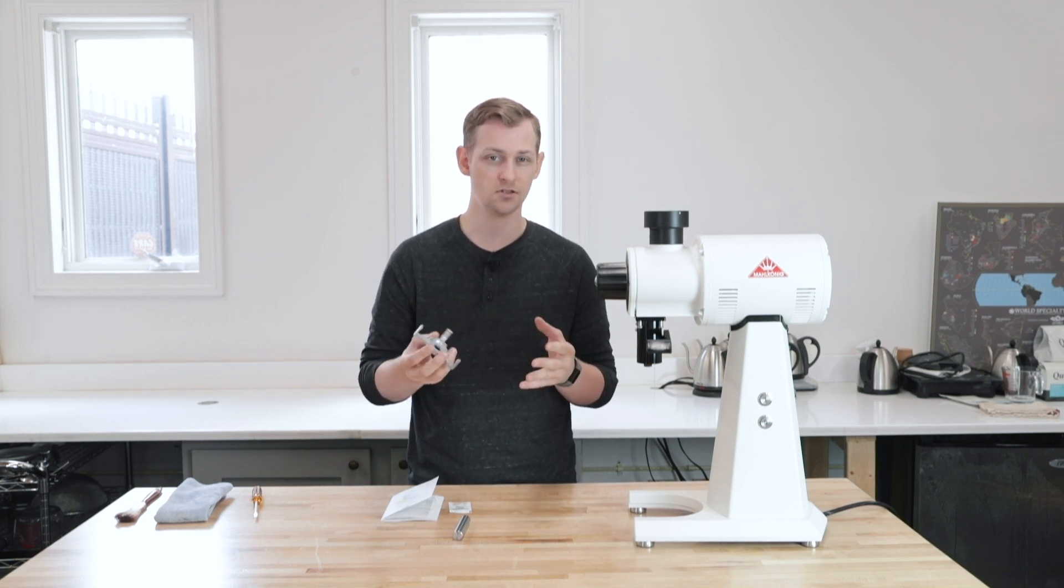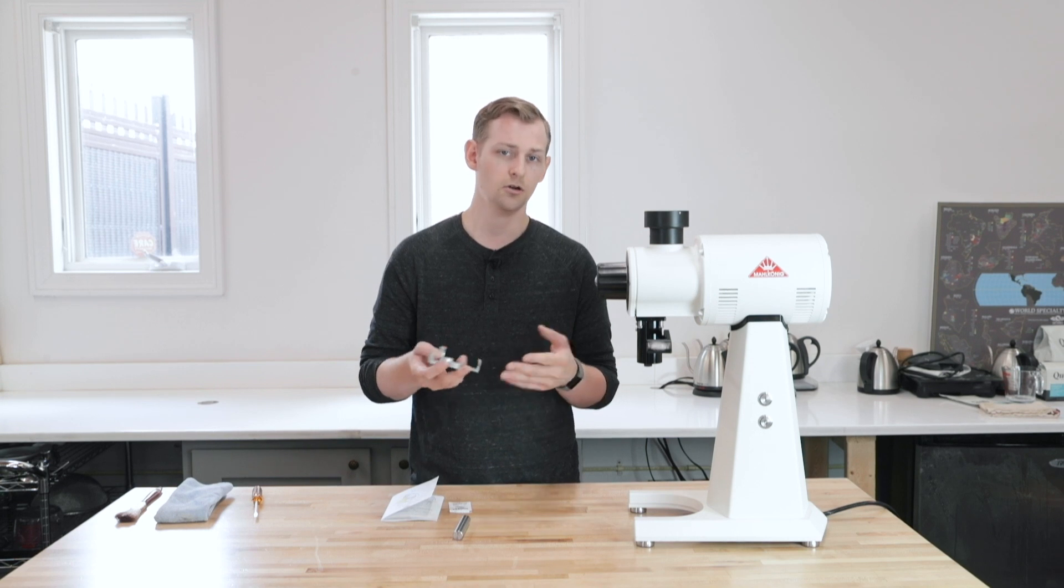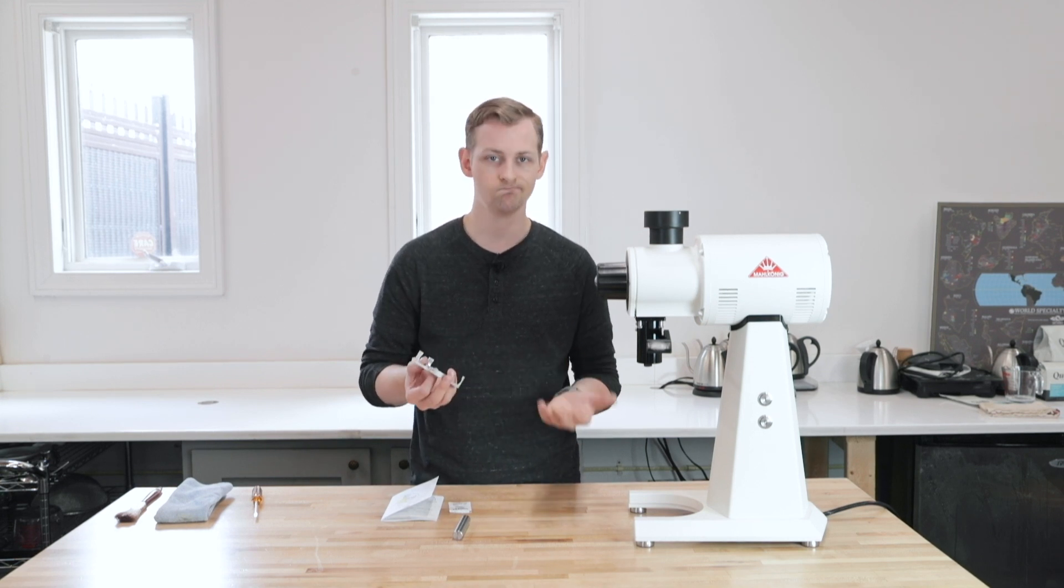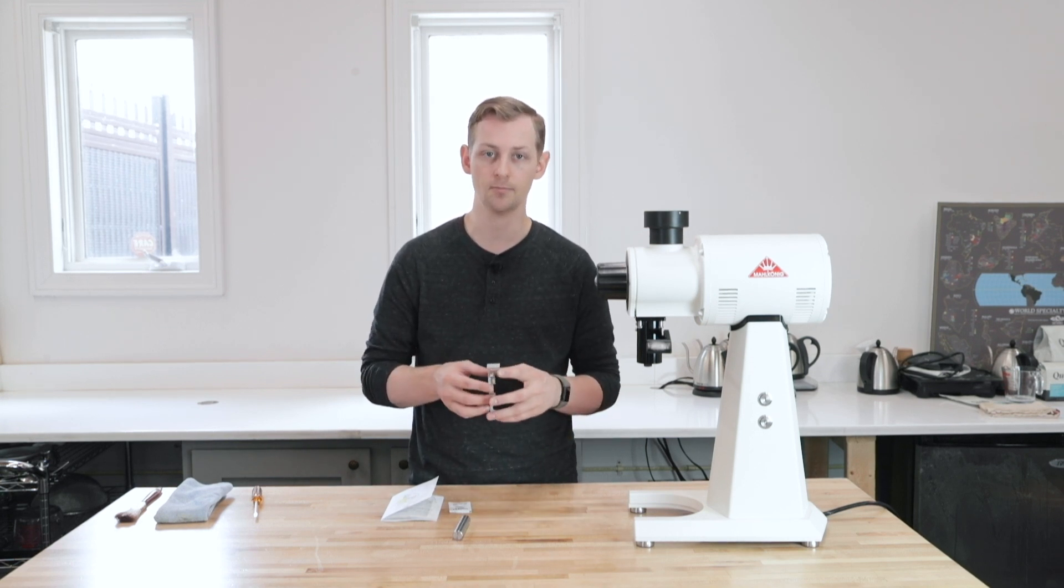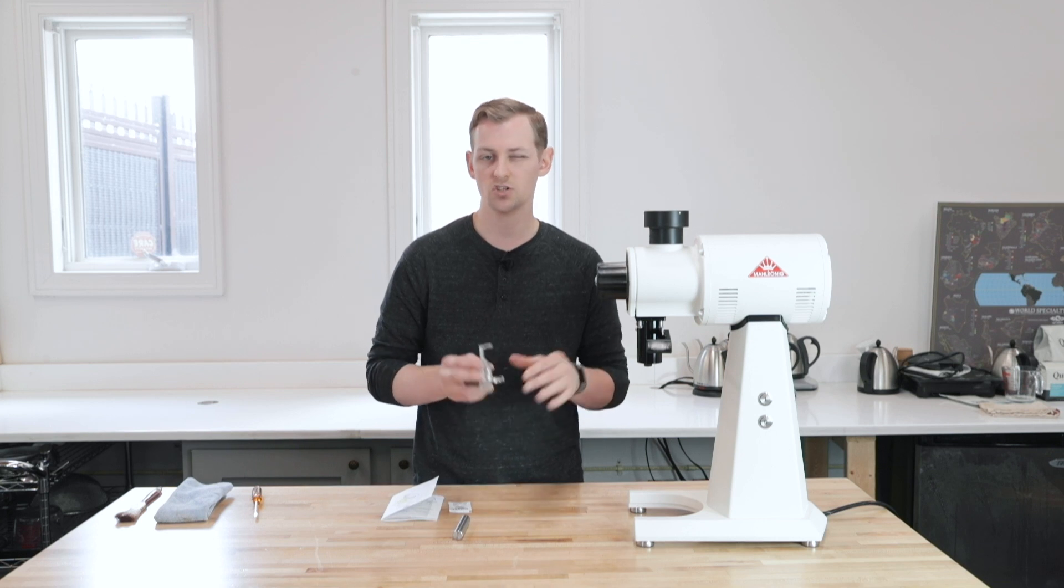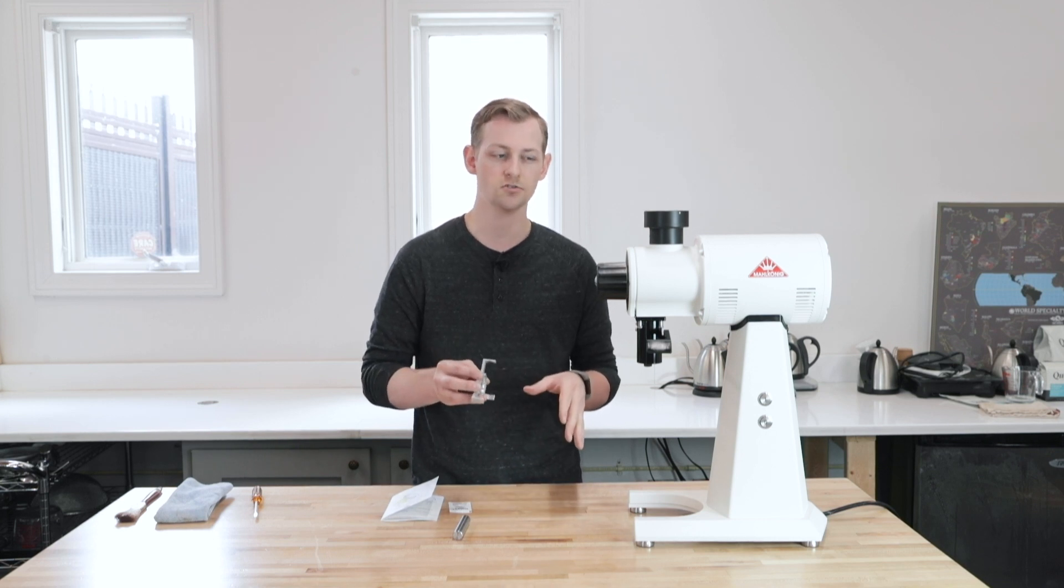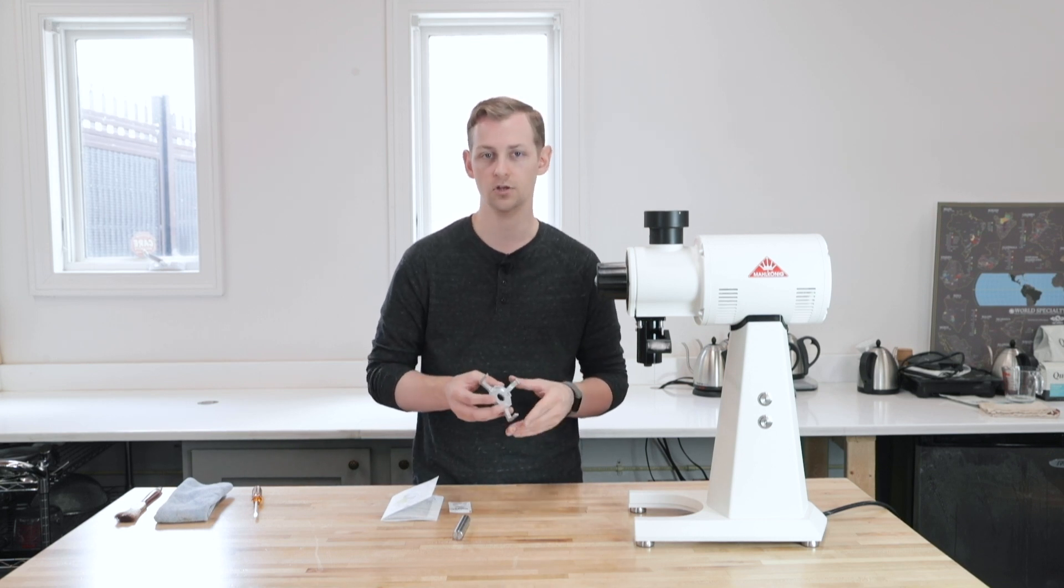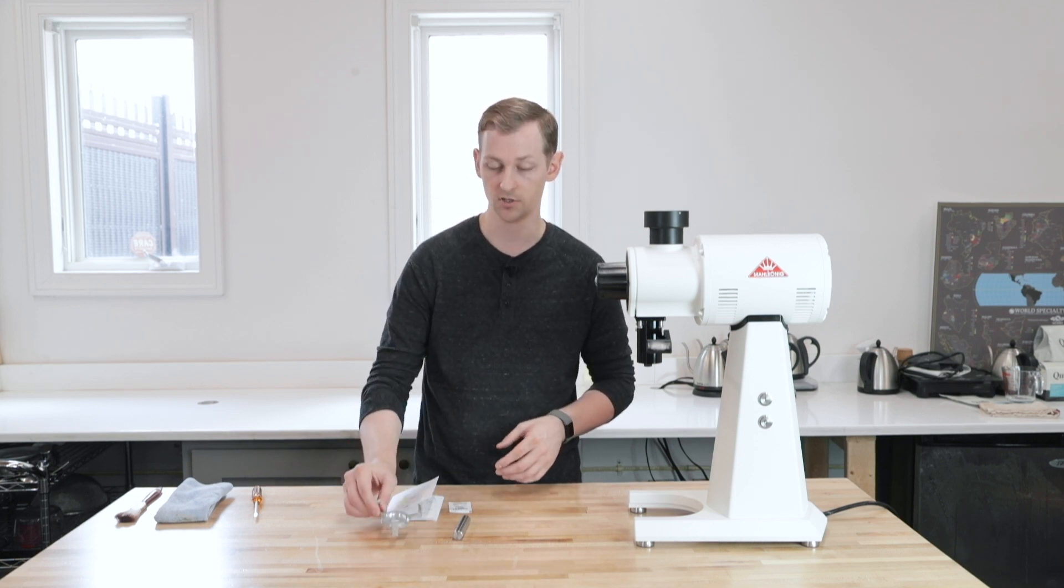So there might conceivably be some other issues. There could be some warping in your burrs. There could be all kinds of other problems. So this is one means of aligning the burrs in your grinder and it is pretty important. I just want to make sure that we understand that there are a few different other ways to align your burrs if that should be something you need to do.